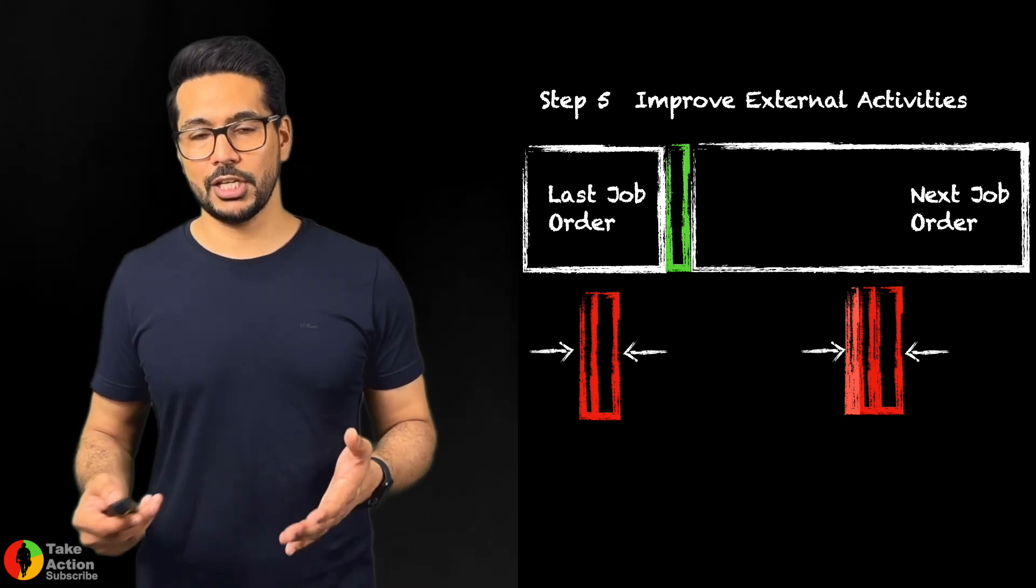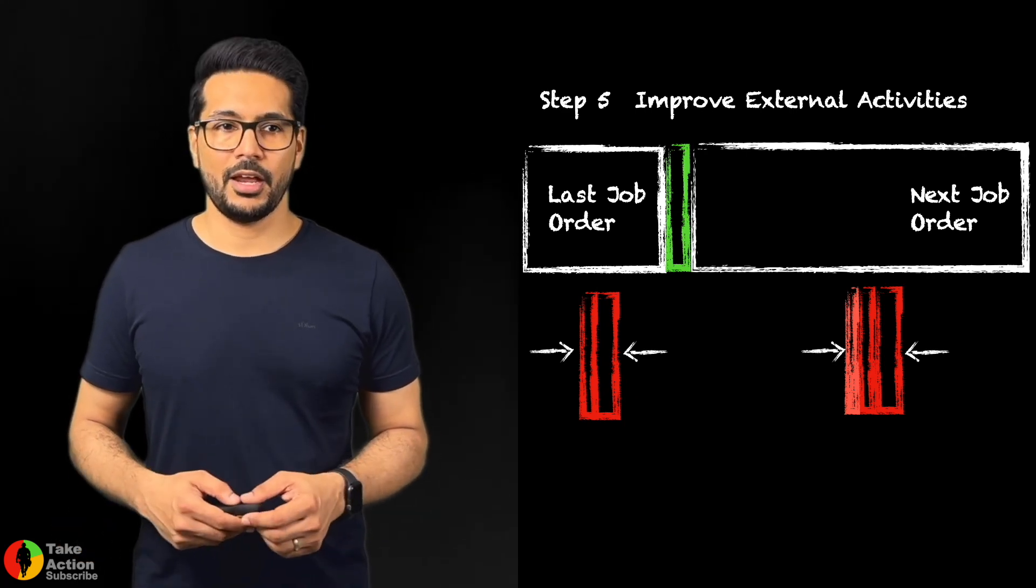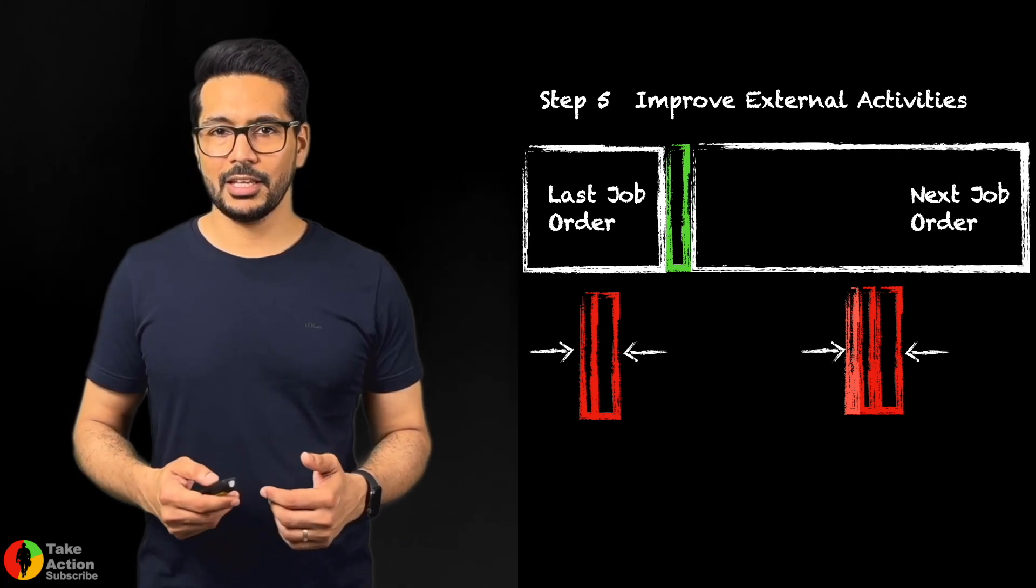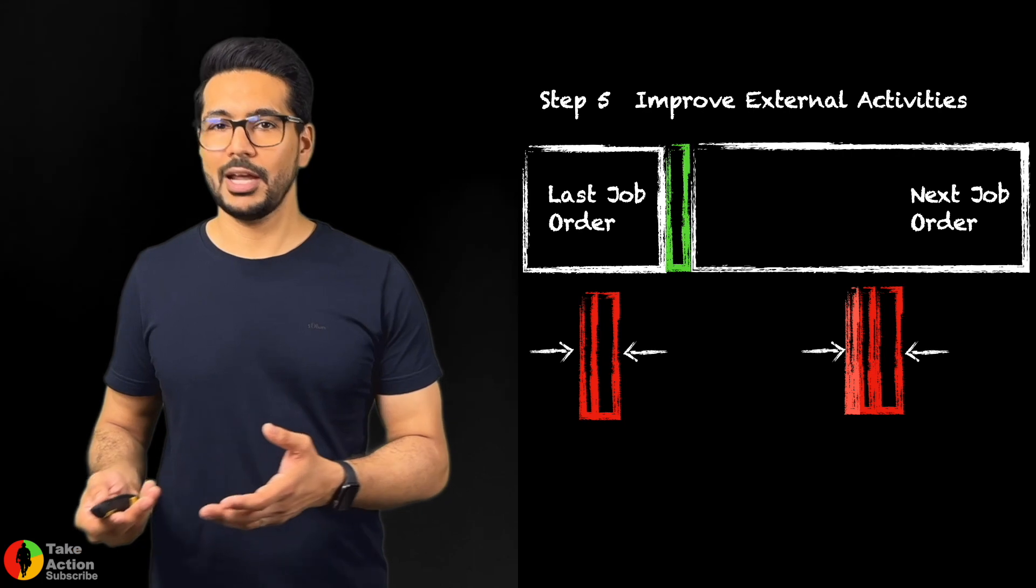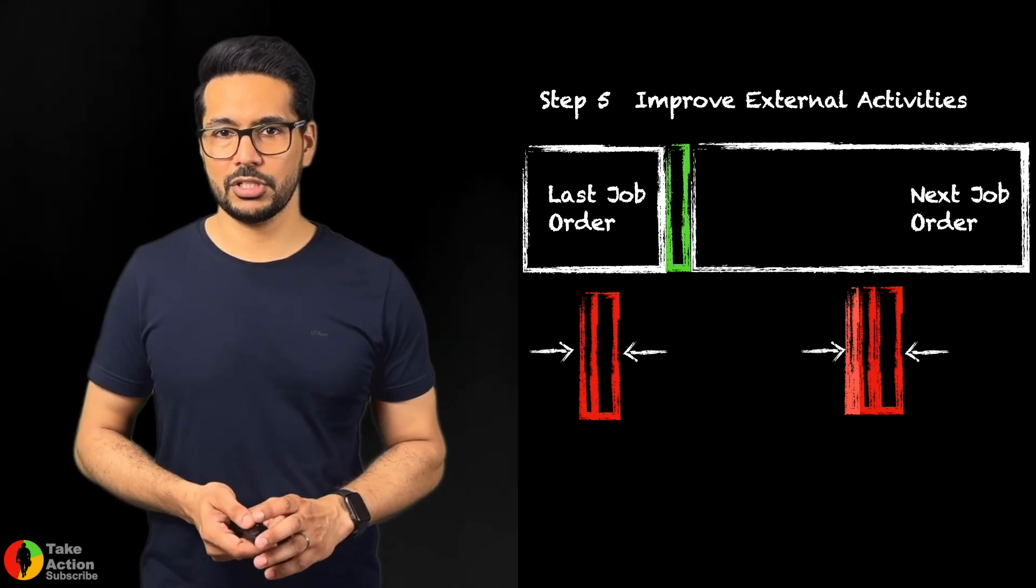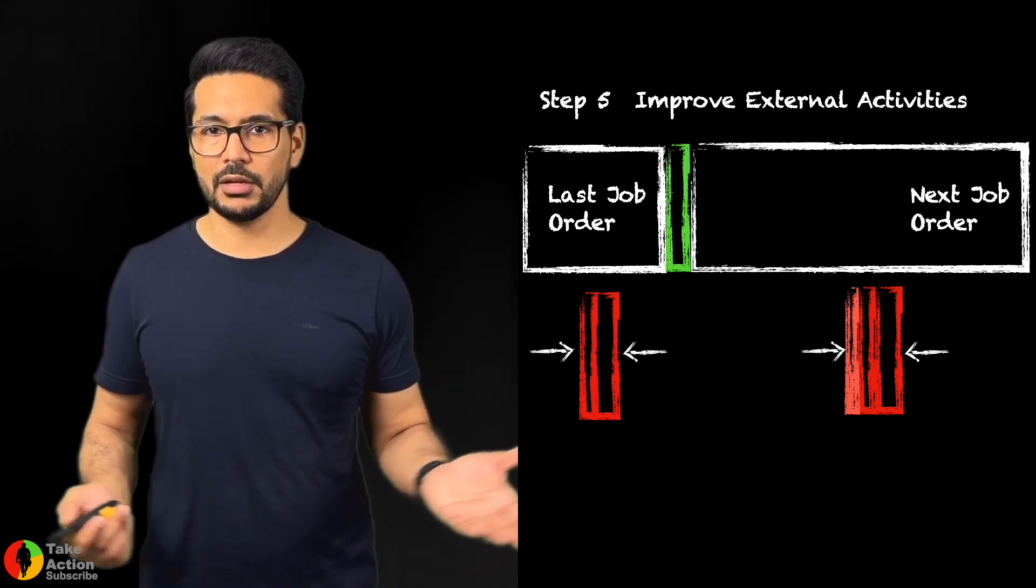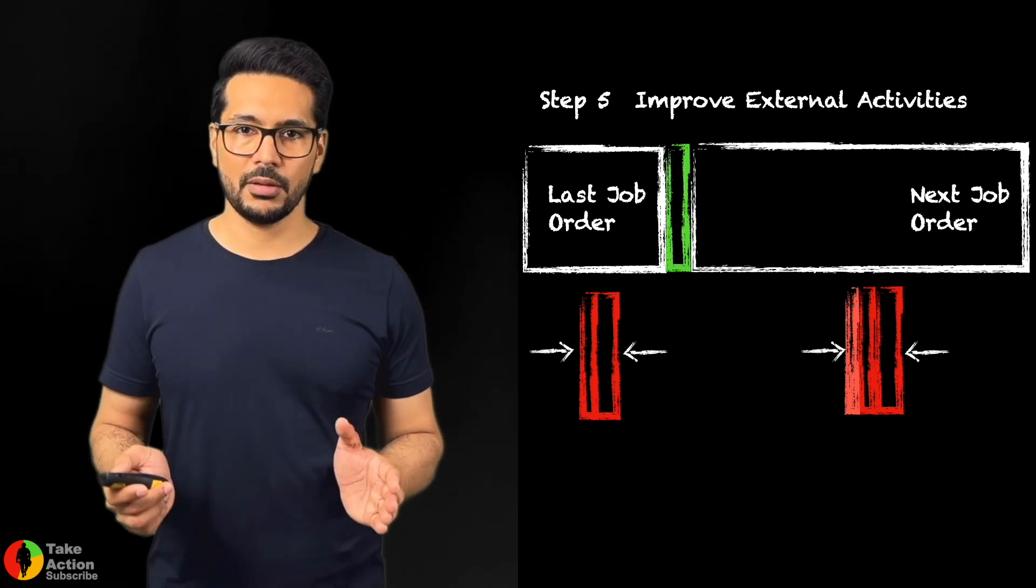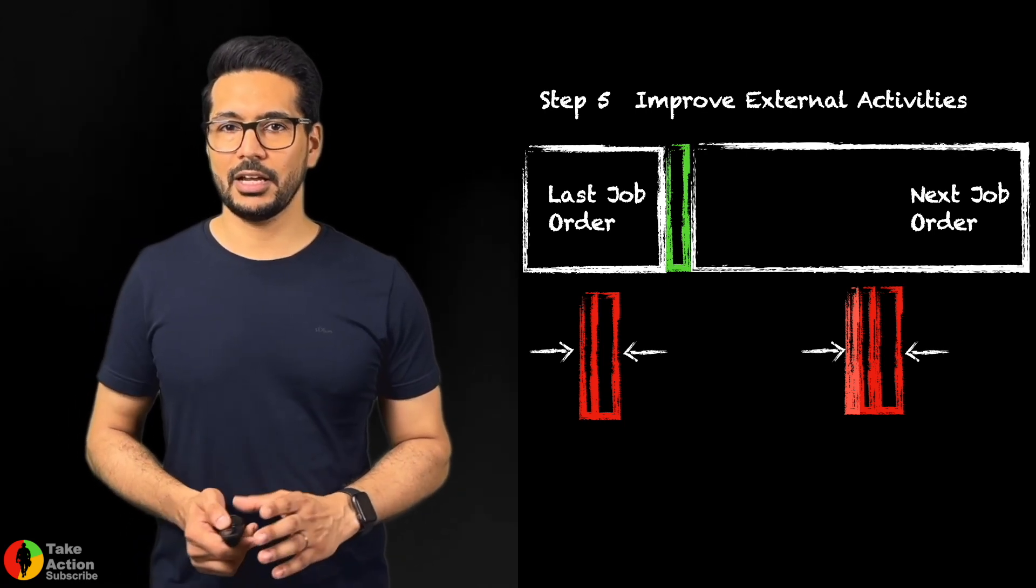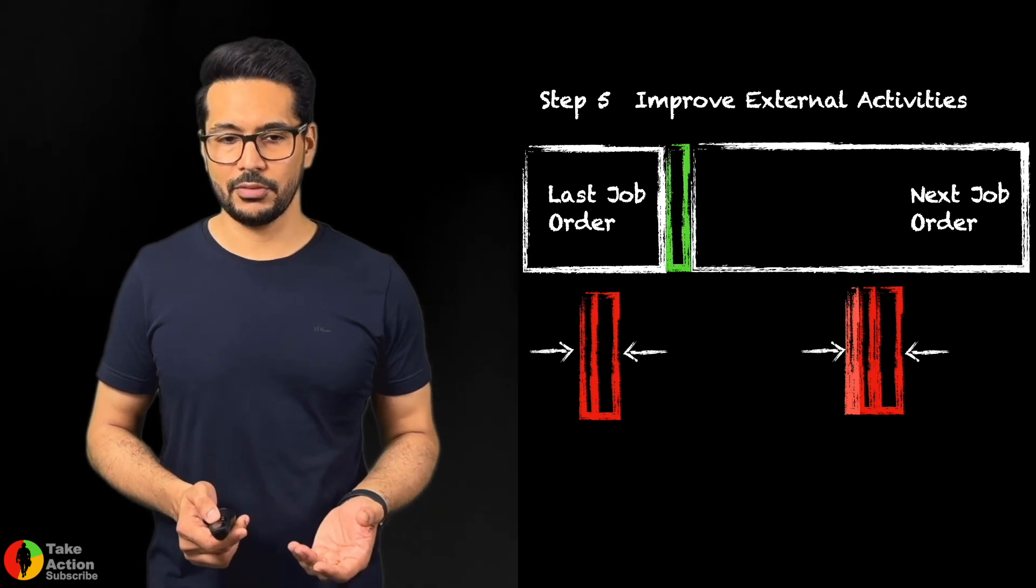If the operator was changing the bits and manually adjusting and aligning, if you have a gauge or something to help with the alignment and tightening of these bits on the chuck, instead of 10 minutes, maybe two or three minutes. This step aims to reduce the external activity, the effort of the external activity.